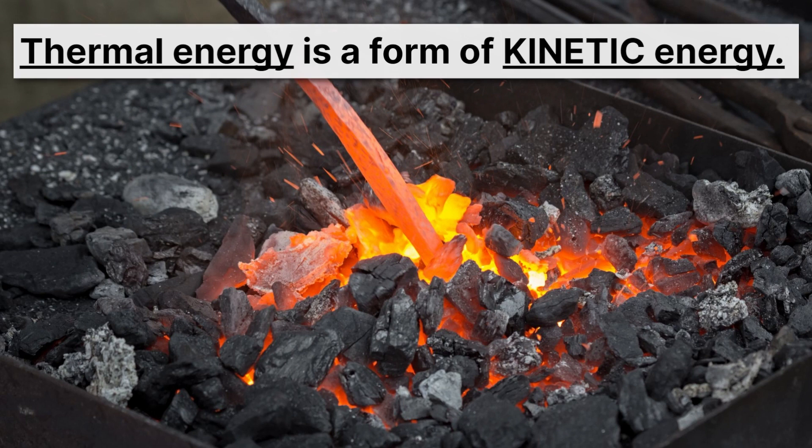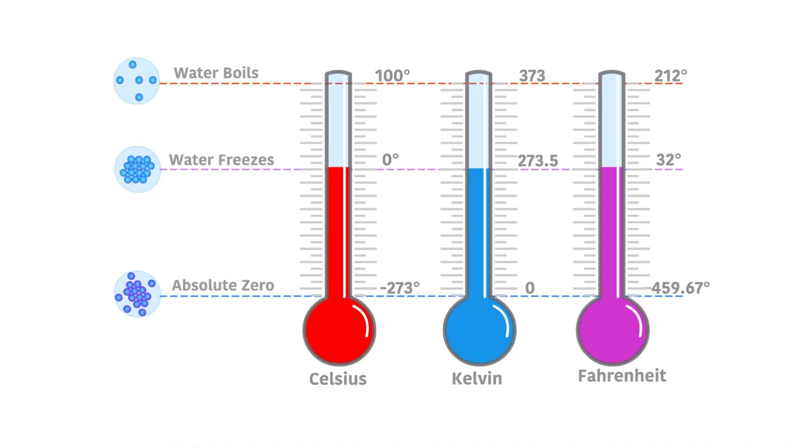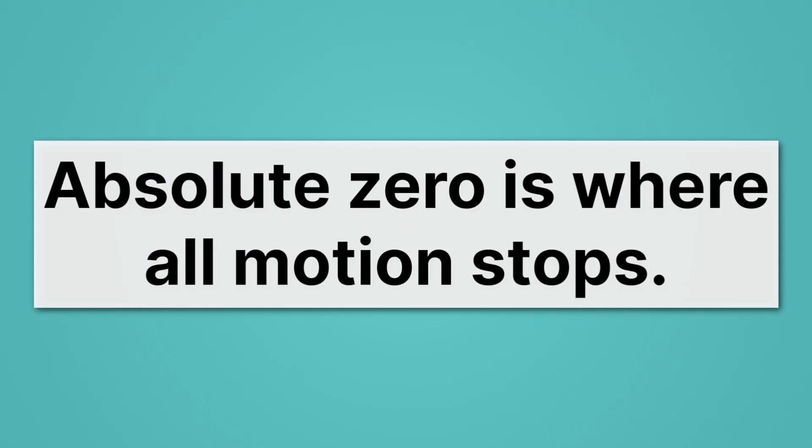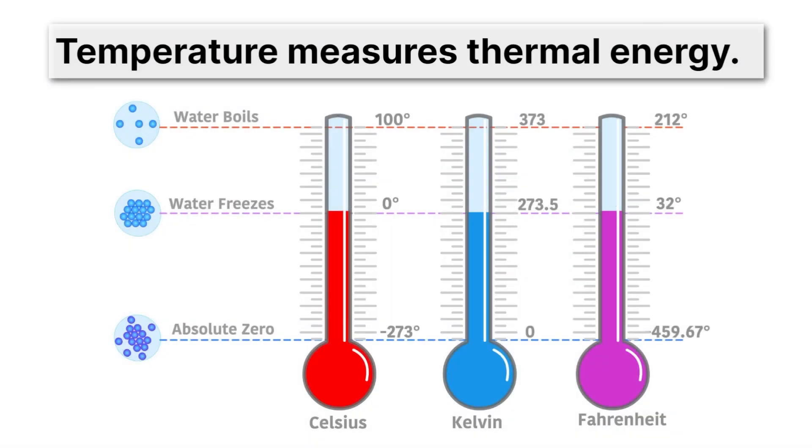And we can measure this thermal energy with temperature scales. Here we have a bunch of temperature scales, which we'll go through in detail later in this unit. We have Celsius, Kelvin, Fahrenheit, and all of those are measures of thermal energy. One thing I'll highlight right now is that all of them have an absolute zero. That is a lowest possible temperature. An absolute zero is a special place. Absolute zero is where all motion stops. But remember, the take home point for now is that temperature measures thermal energy. So that's how we can measure how much thermal energy something has.